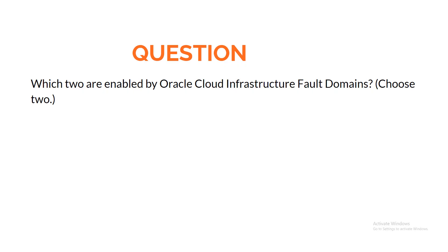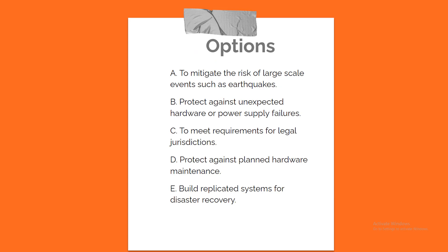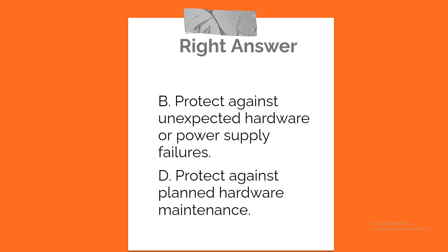Question. Which two are enabled by Oracle Cloud Infrastructure fault domains? Choose two. A. To mitigate the risk of large-scale events such as earthquakes. B. Protect against unexpected hardware or power supply failures. C. To meet requirements for legal jurisdictions. D. Protect against planned hardware maintenance. E. Build replicated systems for disaster recovery. Correct answer: B. Protect against unexpected hardware or power supply failures. D. Protect against planned hardware maintenance.